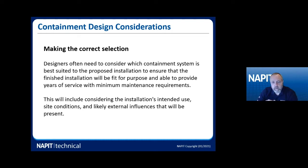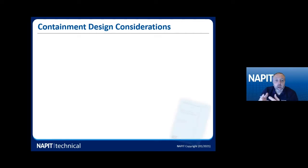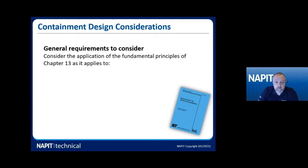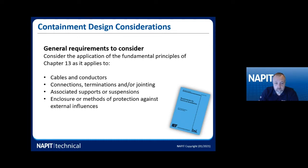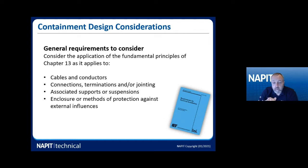Above all else, when we look at our containment we've got to think about external influences that could possibly be present. Chapter 13 asks us to look at cables and conductors, connections, terminations, any jointing, associated supports and suspensions. That's quite important when we're putting together large pieces of tray, basket, or trunking overhead, because if we have too big a gap between supports or haven't anchored our drop rods into a suitable substrate, we could be in a lot of problems — especially if we're overloading our tray with too heavy a cable.